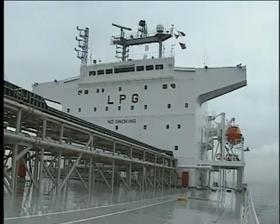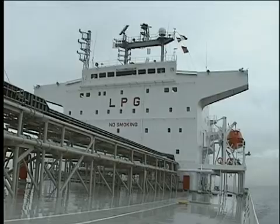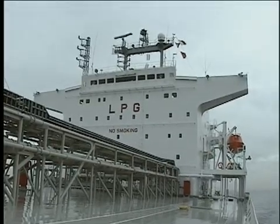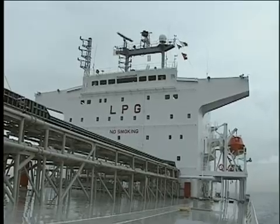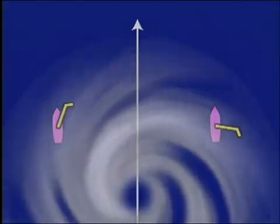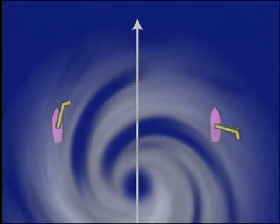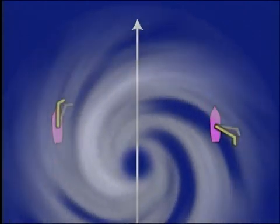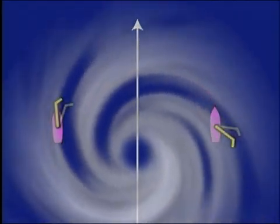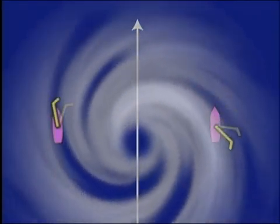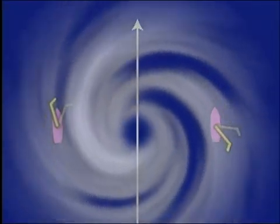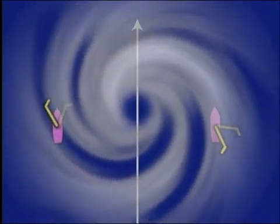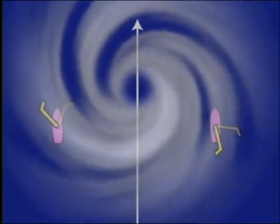It is necessary to know the relative position of a ship to the subject tropical depression or typhoon to minimise its effects. When a typhoon is moving north and the wind direction observed on board changes clockwise, the ship is in the right semicircle of a typhoon. In contrast, if the wind direction changes counterclockwise, the ship is in the left semicircle of a typhoon.